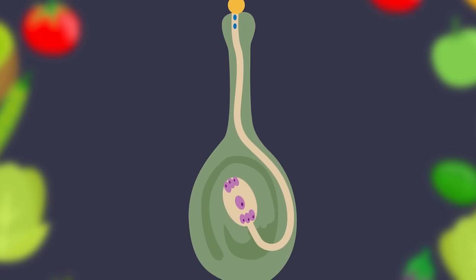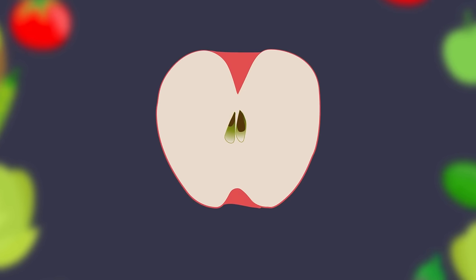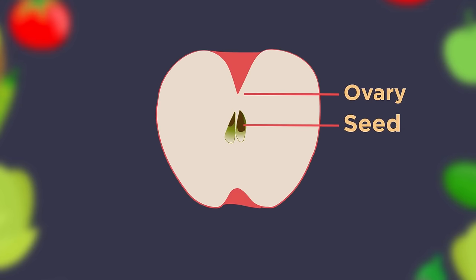The male sex cells travel from the pollen grain down the pollen tube to the female ovule. One male sex cell fuses with the female egg, fertilizing it — this develops into a seed. The other male sex cell attaches to two cells in the embryo sac, forming an endosperm, which provides the starchy food for the seed to grow. The ovary then enlarges and becomes a fruit surrounding the internal seeds.